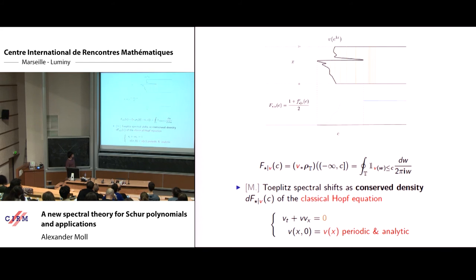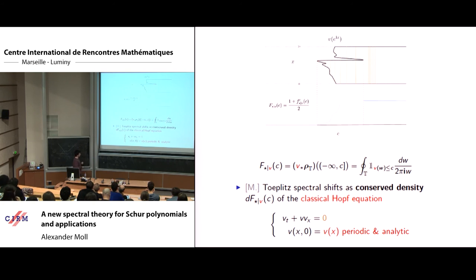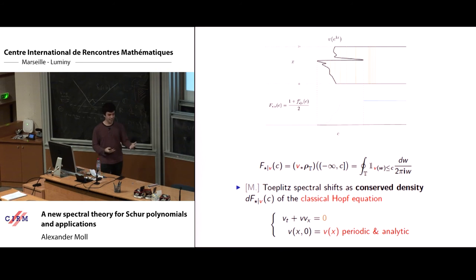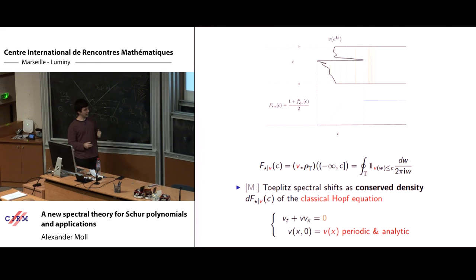Toeplitz operators and their spectral shifts give us a new incarnation of this f. What I'm not telling you today is a good reason to care about this f, which is that if you look at this initial value problem — the Hopf equation with real periodic initial data — then this f is a conserved density. If you made a movie of this equation, we know that after some time there's formation of shocks and catastrophe, but if you drew this picture of v for some initial data and plotted this blue region, as v evolved the blue would not change. There are infinitely many conservation laws in this equation — this is a distinguished example of an infinite-dimensional classical integrable system.